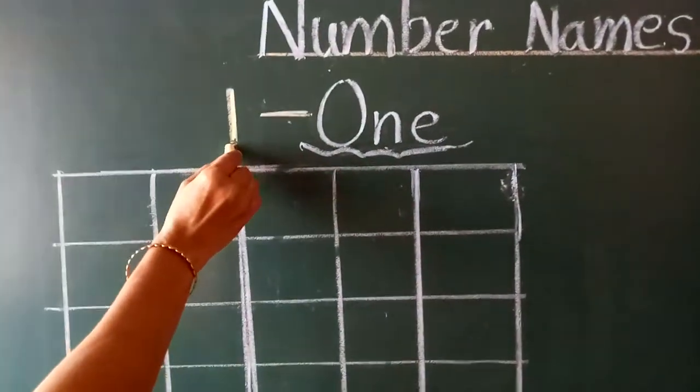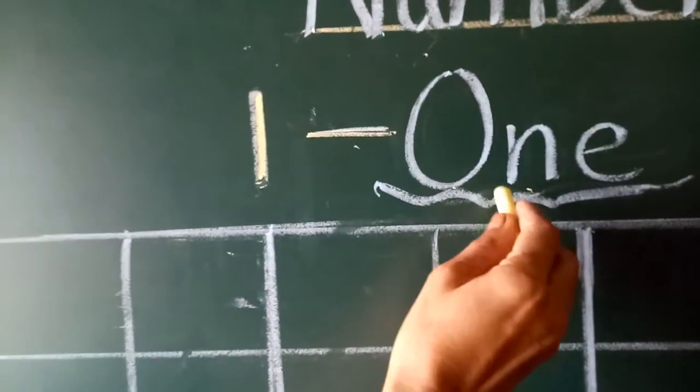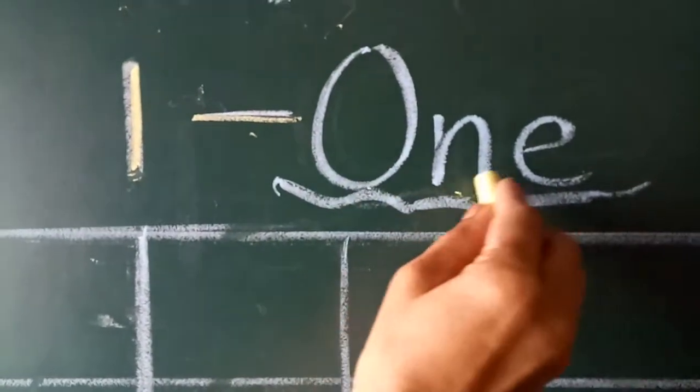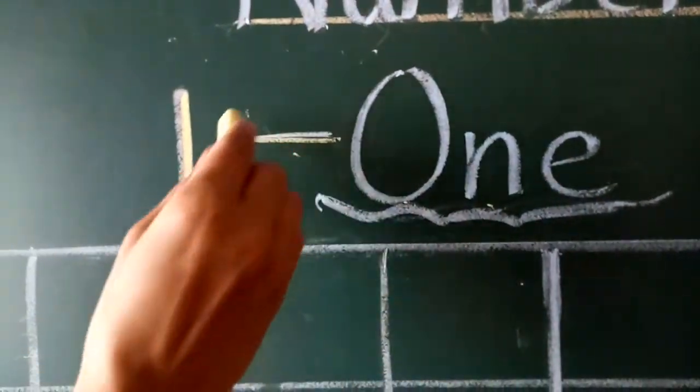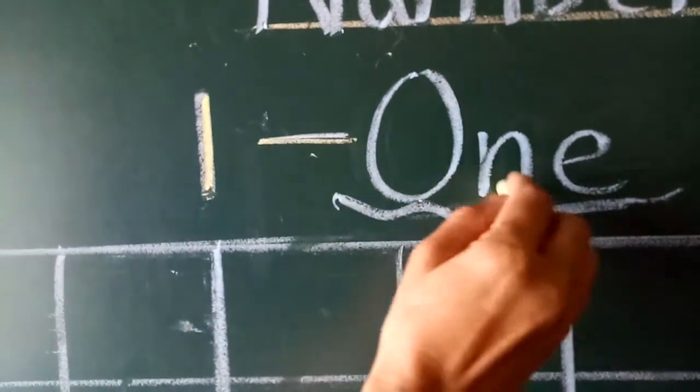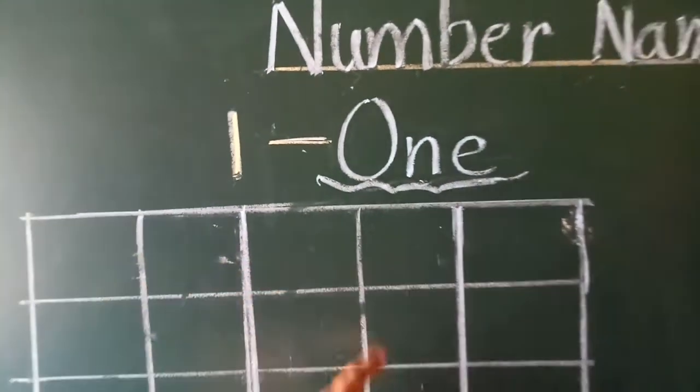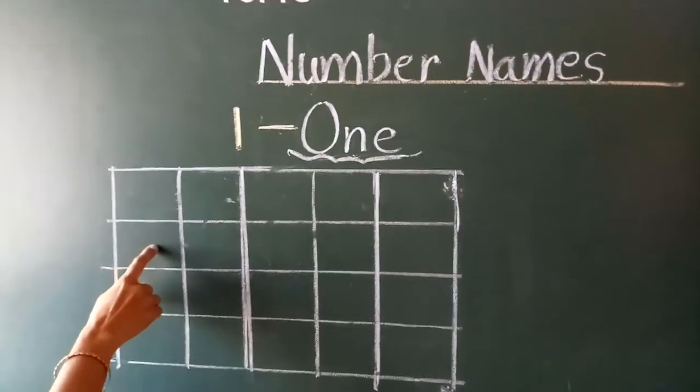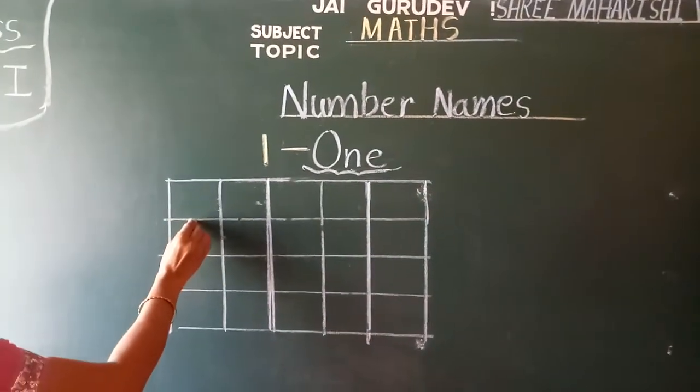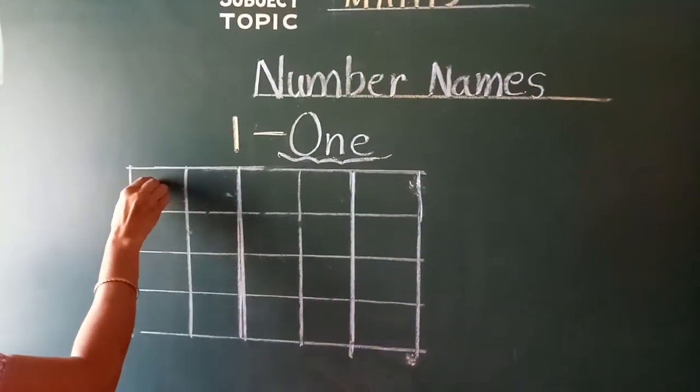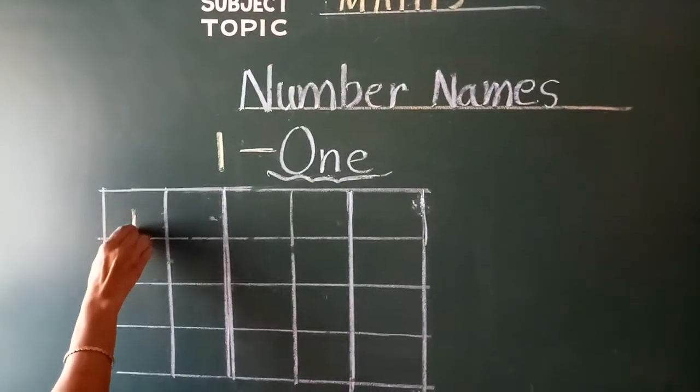Which number is this? Speak with me. O-N-E. What is the spelling of one? O-N-E. In this box, you have to write properly. Touch the box line. Speak and write: one.